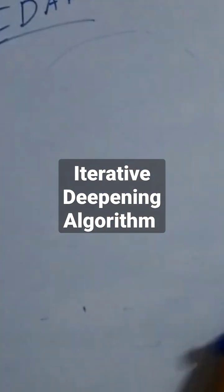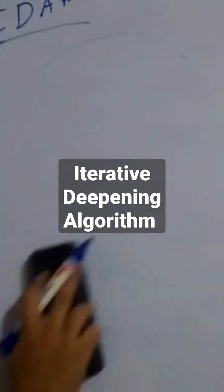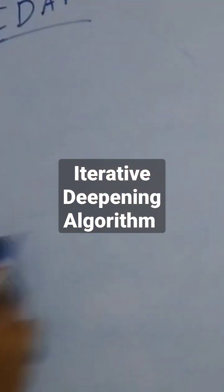First of all, we need to talk about iterative deepening, which is one kind of uninformed searching technique. First we need to talk about the IDA.